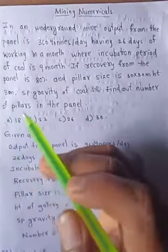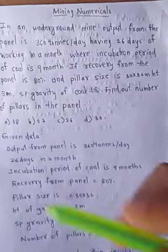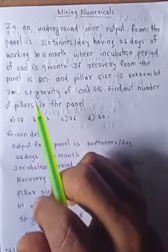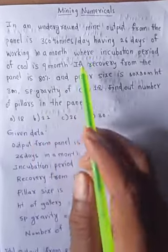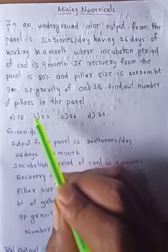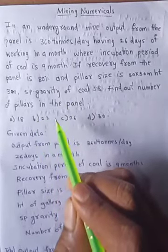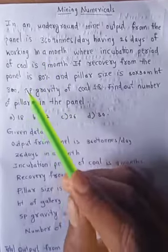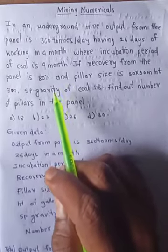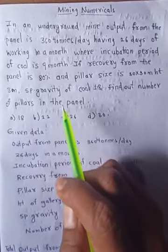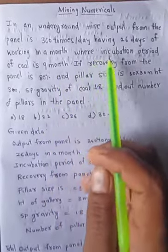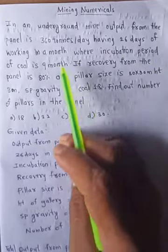Hi guys, welcome to Mining Numericals. As per the video lectures, today I am dealing with a topic related to coal mining. Here I have given you a related question and I'll solve this question. We have to find out the number of pillars in a panel when output per day, number of working days, incubation period, recovery of a panel, and specific gravity of coal are given. The incubation period is nine months.